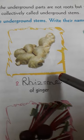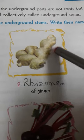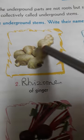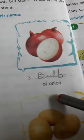Second, rhizome of ginger. In Hindi it is known as Adhrak. Bulb of onion. In Hindi it is known as Pyaj.